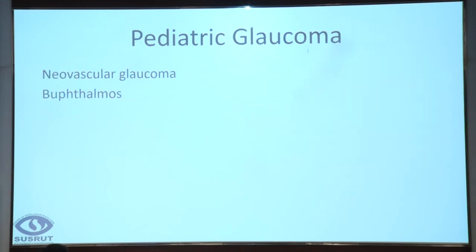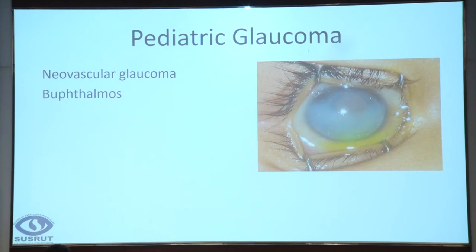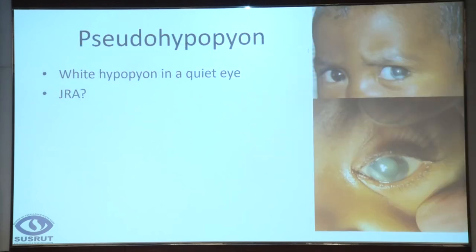The next is buphthalmos, or pediatric glaucoma. Many of these children, when they develop neovascular condition of the iris, go on to develop glaucoma and present with buphthalmos. There is a hazy cornea and you cannot see the fundus. There have been instances when these children have undergone trabeculectomy with trabeculoplasty, ending up with metastasis. Dr. Honavar used to show a slide with a child presenting with a huge lymph node. All that you need to do in such patients — before you start glaucoma therapies — is just do an ultrasound.